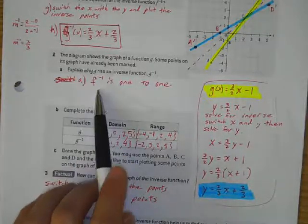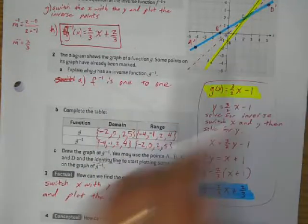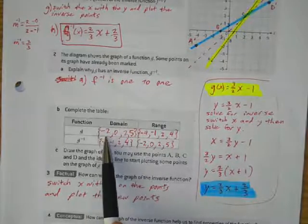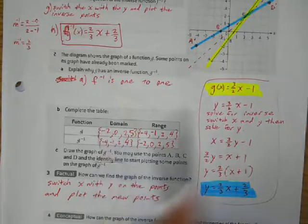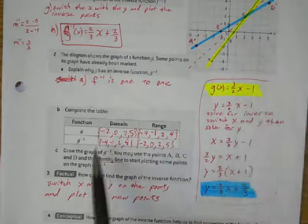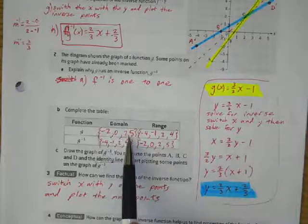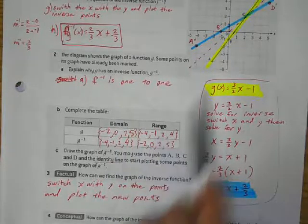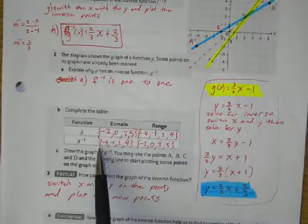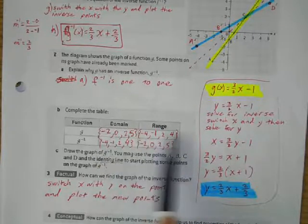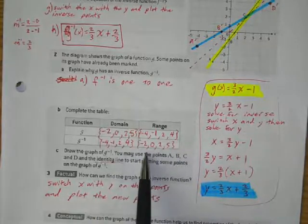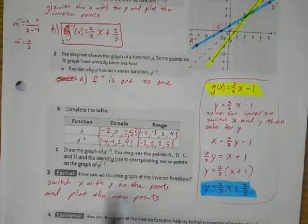This function is 1-to-1. The domain values A, B, C, D are plotted as inputs, the y values are found, and for the inverse function the range values become the domain and the domain values become the range — you just switch the x and y points.